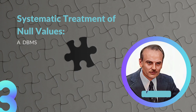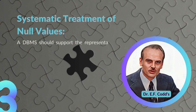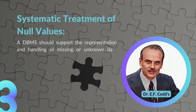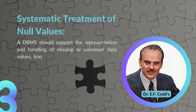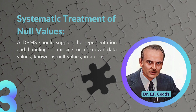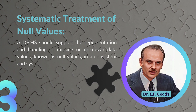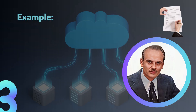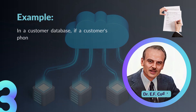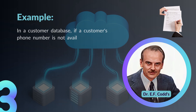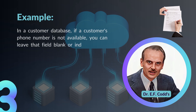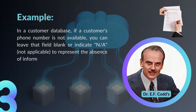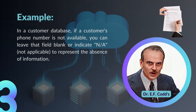Rule number three: Systematic Treatment of Null Values. A DBMS should support the representation and handling of missing or unknown data values, known as null values, in a consistent and systematic manner. For example, in a customer database, if a customer's phone number is not available, you can leave that field blank or indicate 'not applicable' to represent the absence of information.